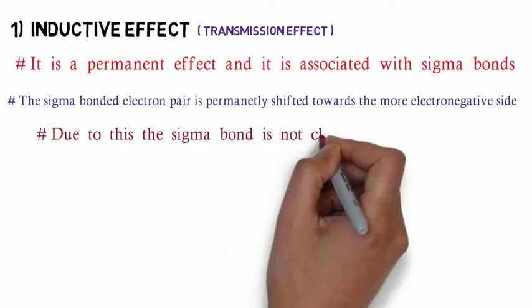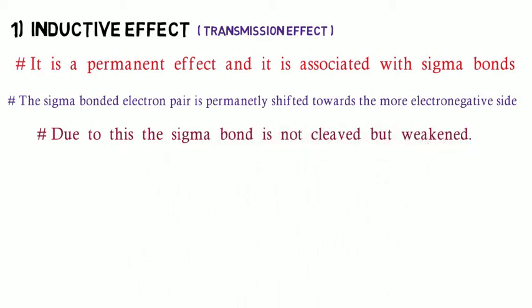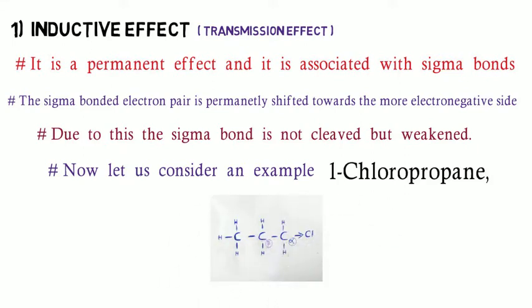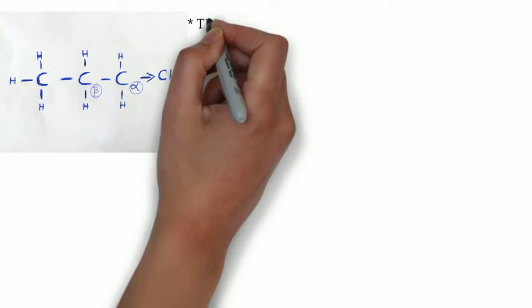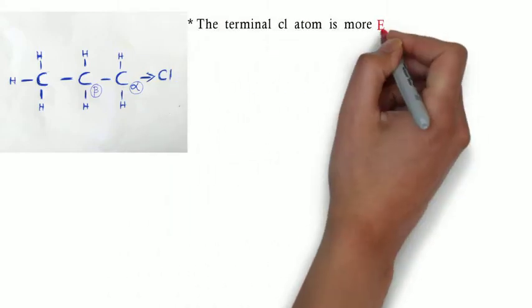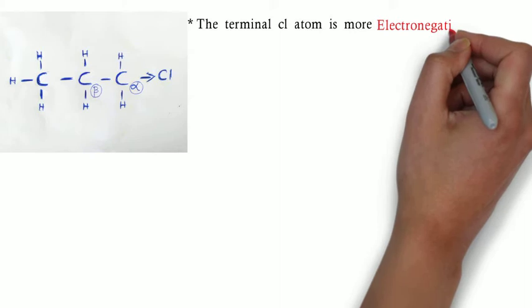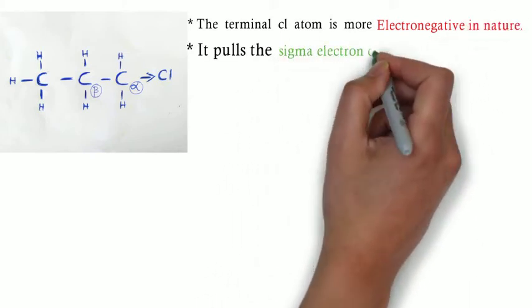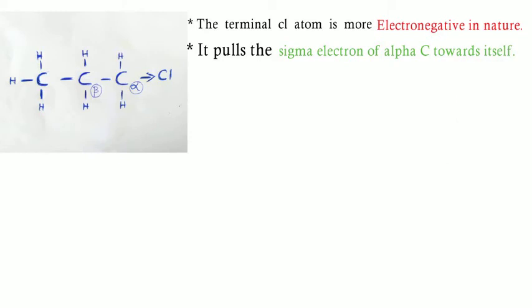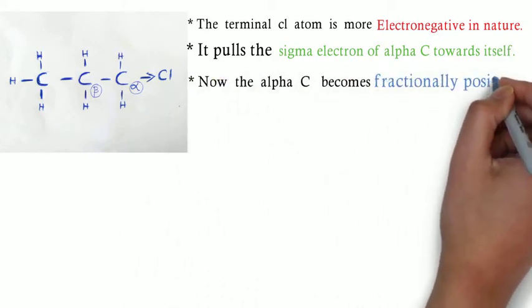In the inductive effect, the sigma bonded electron pair is permanently shifted towards the more electronegative side. Due to this, the sigma bond is not cleaved — it is not cleaved but it is weakened. Let us consider an example: 1-chloropropane. In 1-chloropropane, the terminal chlorine atom is more electronegative compared to the other carbon atoms, so it has the ability to pull the sigma bonded electron pair of the alpha carbon towards itself and makes the alpha carbon fractionally positive.